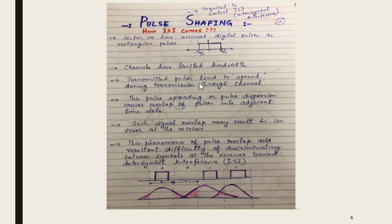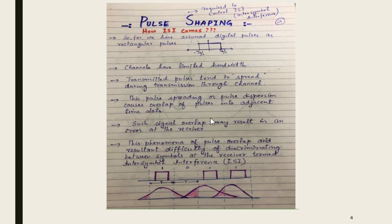When pulses are transmitted through these band-limited channels, the transmitted pulses tend to spread during transmission. This pulse spreading, or pulse dispersion, causes overlap of pulses into adjacent time slots. Such signal overlap may result in an error at the receiver.